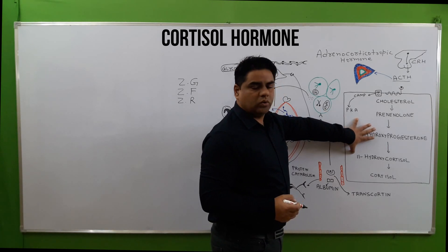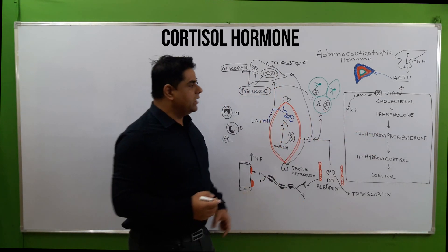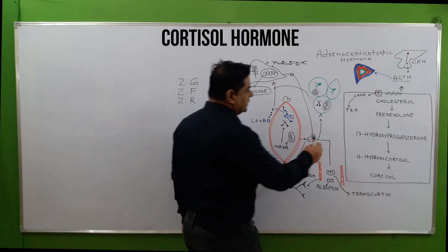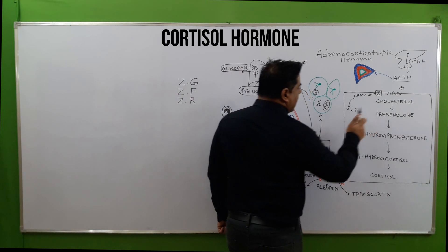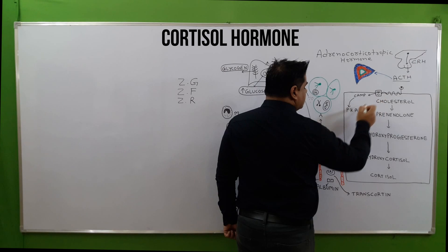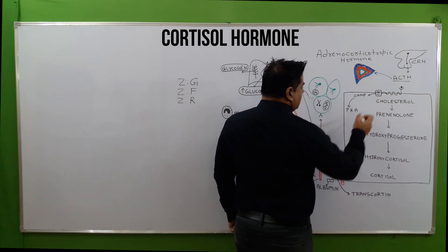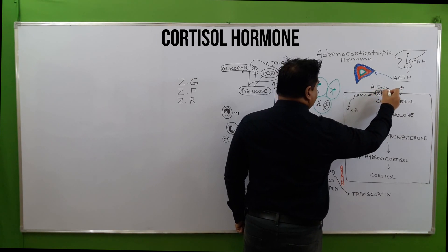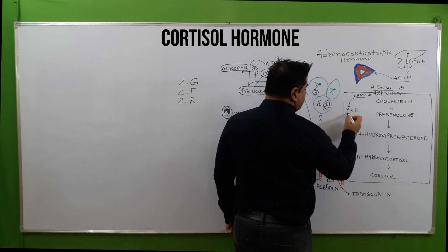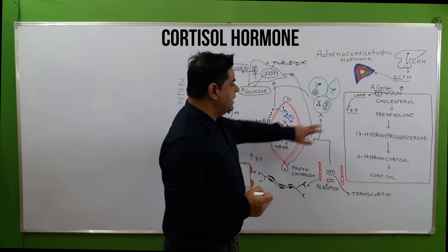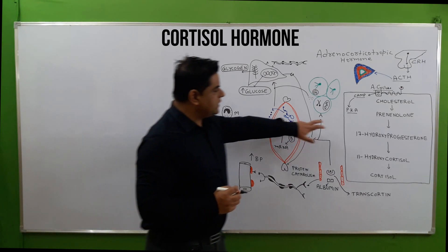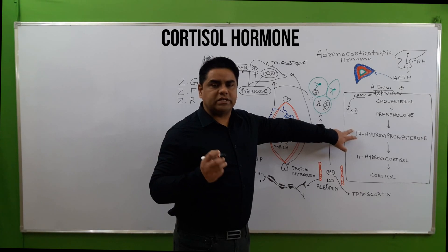We have taken a cell from the zona fasciculata to explain what is happening inside the adrenal gland cells. As soon as ACTH binds on the receptor, it stimulates G-stimulatory proteins. The adenylate cyclase enzyme is then activated, forming cyclic AMP, which activates protein kinase A inside the zona fasciculata cell.